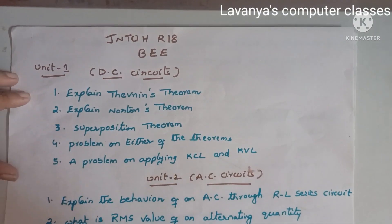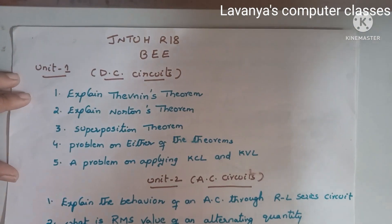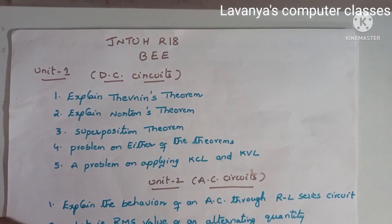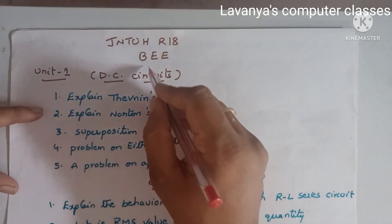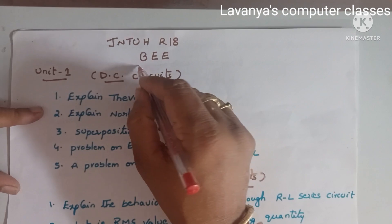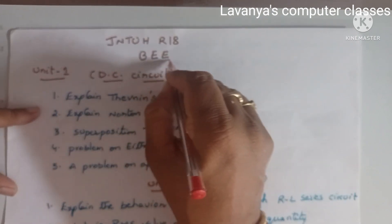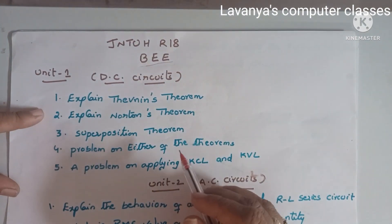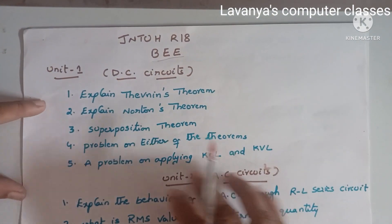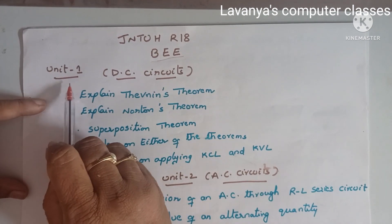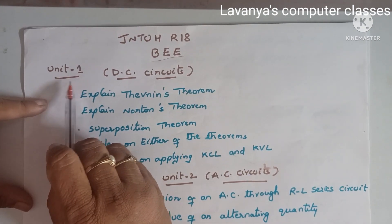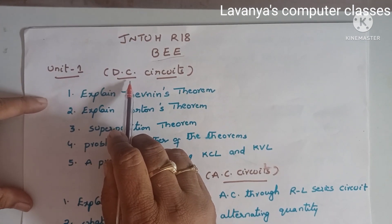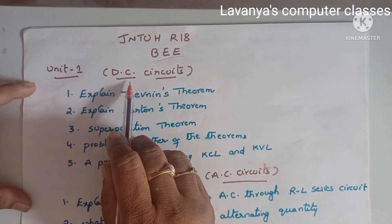Welcome to Ullavanya's computer classes. In this video, I will explain JNTUHR18 VEE most important questions, explained unit-wise. First, Unit 1 — the chapter name is DC circuits.